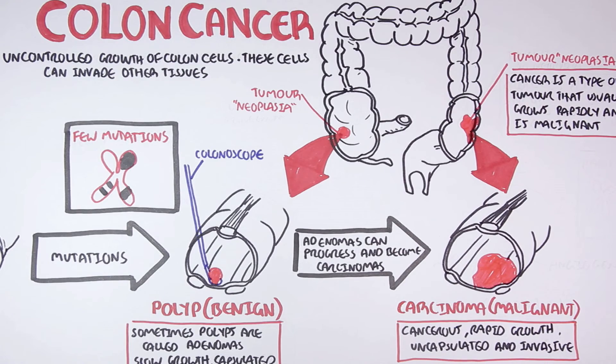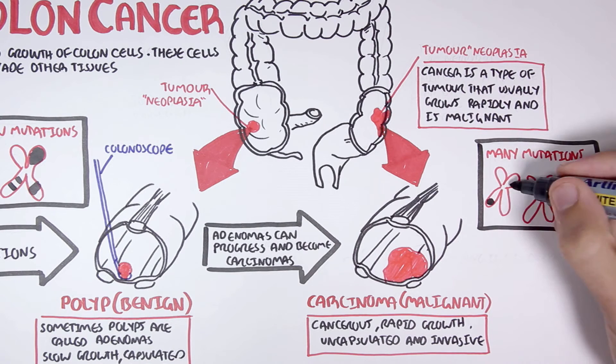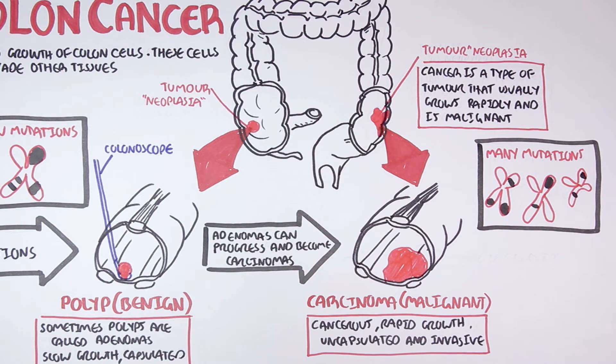For colon carcinomas to develop, for example, we would expect to see multiple mutations in the DNA of many chromosomes. Carcinomas and big tumors also usually have a lot of blood supply, as these abnormal growing cells require many nutrients.